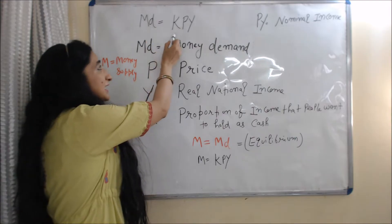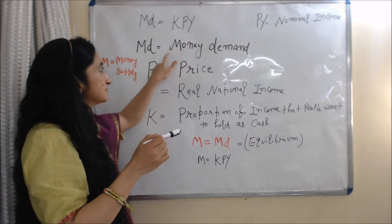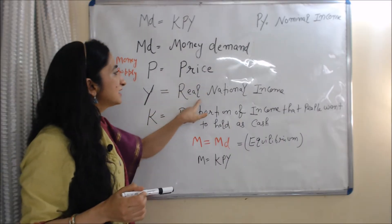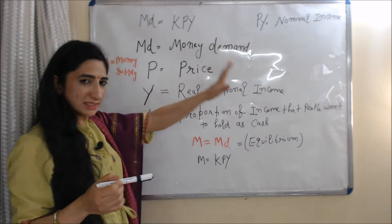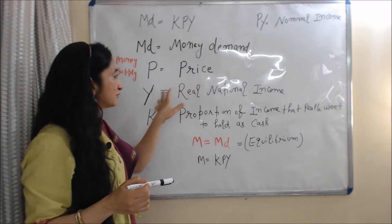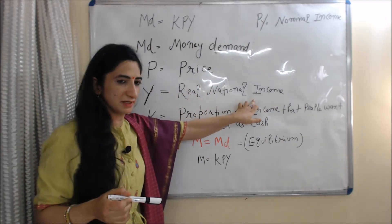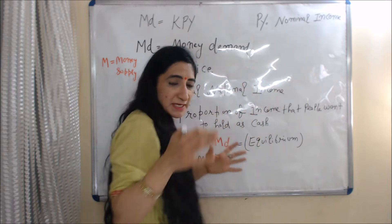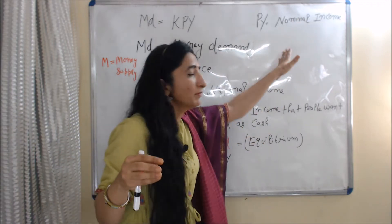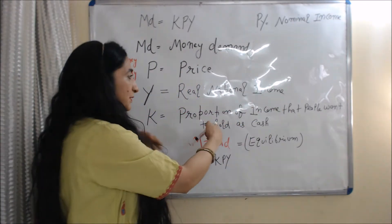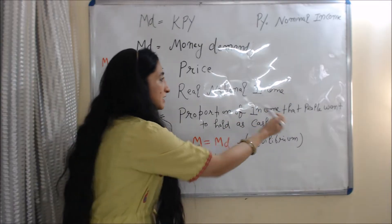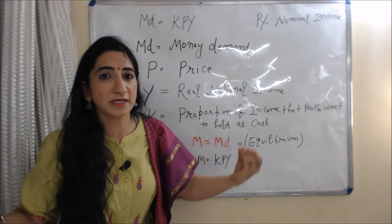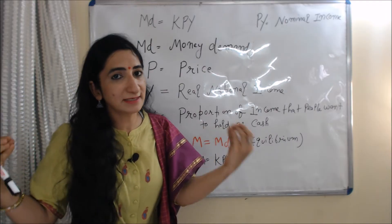The equation is: MD equals KPY. MD is money demand, P is price, Y is real national income, and P into Y gives us nominal income. K is the proportion of income that people want to hold as cash.